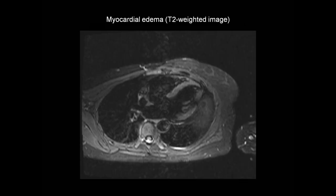This is a T2-weighted image. In this image, we look for evidence of either regional or global increase in myocardial signal intensity — one of the Lake Louise criteria. This is the left ventricle, the right ventricle is just here, and the two atria are here. The left ventricular myocardium appears quite bright, so we have an increase in myocardial signal intensity in this T2-weighted image, meeting one of the Lake Louise criteria.